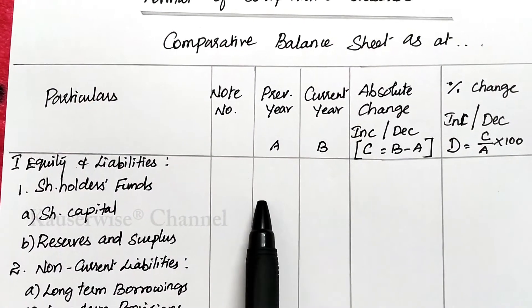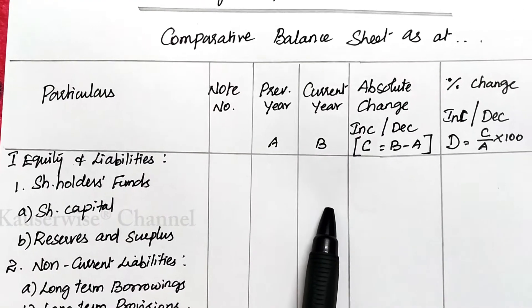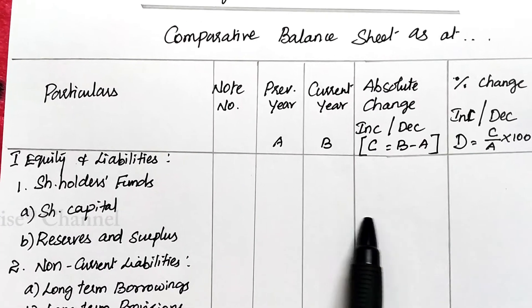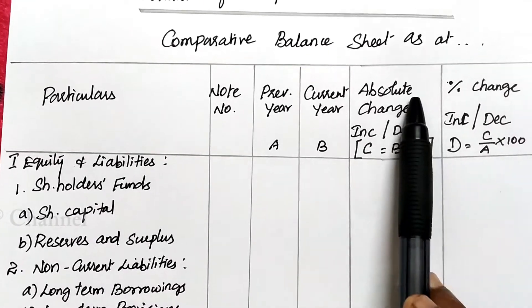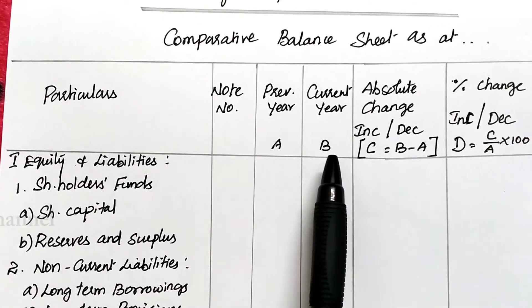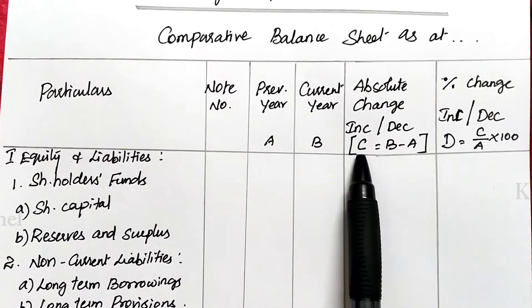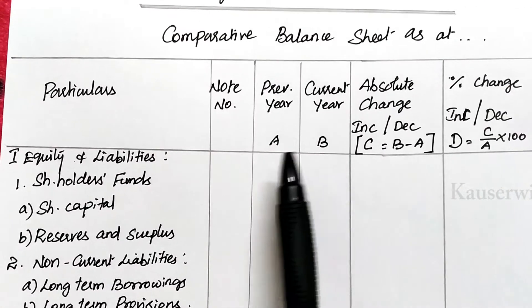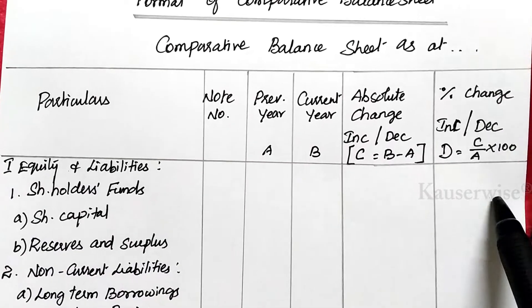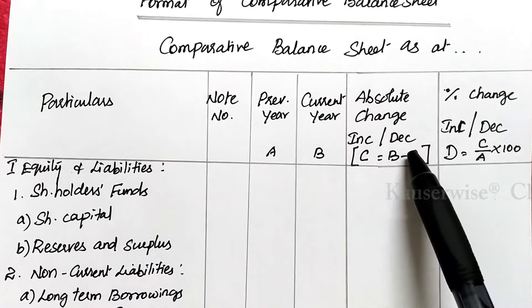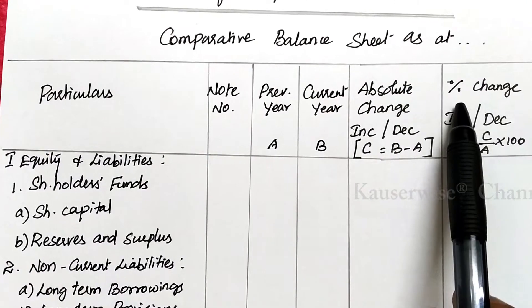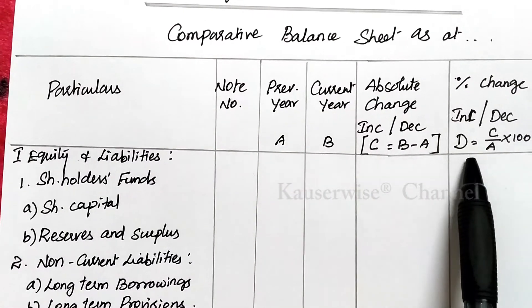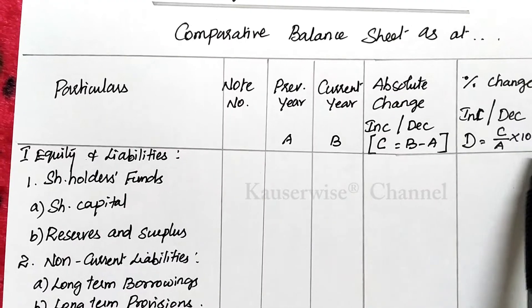Absolute change means we compare previous year with current year data. When you compare two data you can find some changes — it may be increase or decrease — and that will be entered in the absolute change column. So column A is previous year, B is current year, and C is absolute change. The formula is B minus A, that is current year minus previous year. Finally we need to find the percentage change.